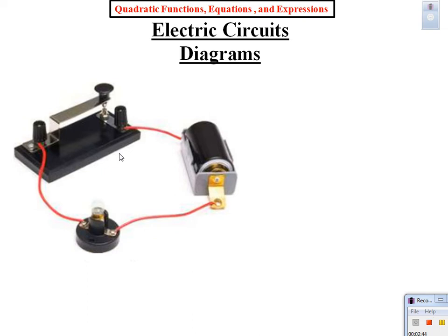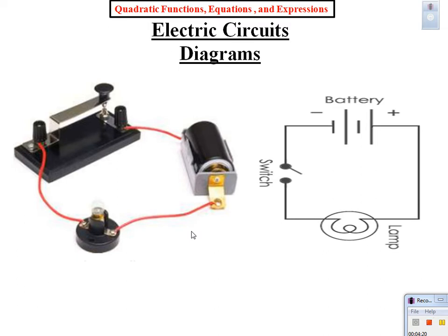Let me show you the diagram I would include in the Ziploc bag for instructions. Does it pretty much reflect what we just talked about? Here's the battery — one side is positive going to the lamp, the other side is negative. But in between there's a switch. Positive going to one side of the lamp, negative going to the other side, and there's a switch right there. This is what we call an electric circuit diagram.